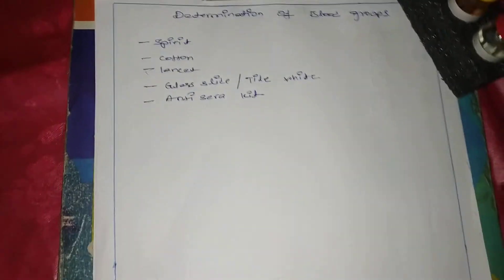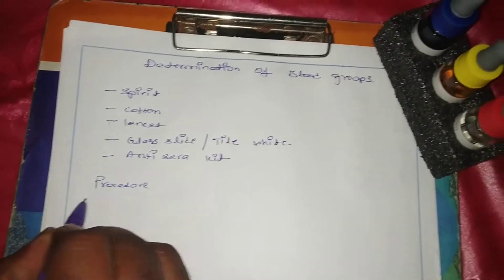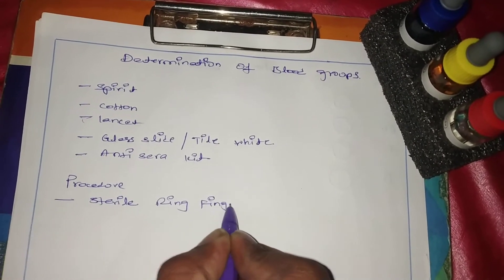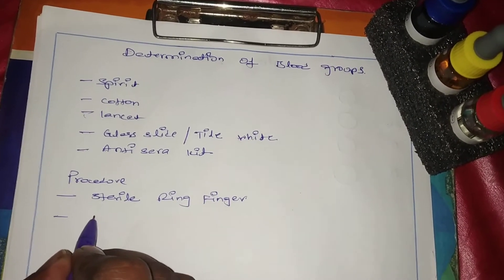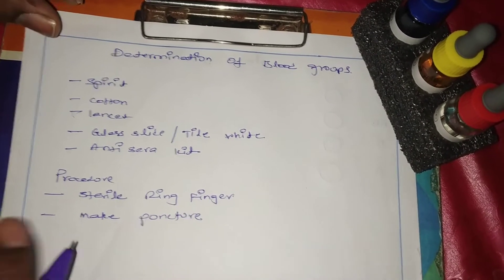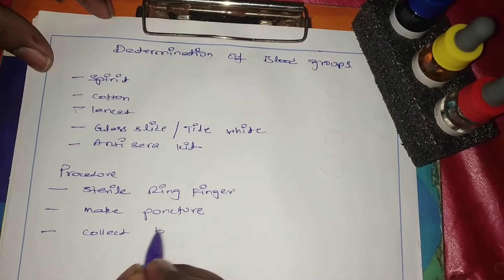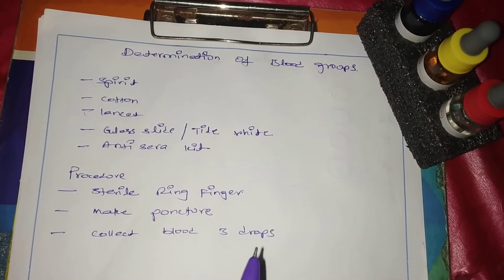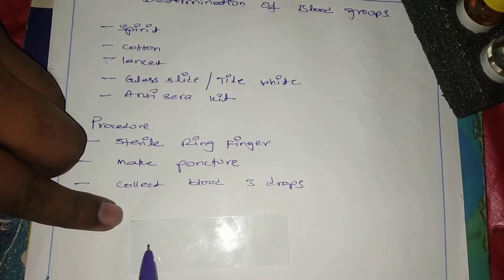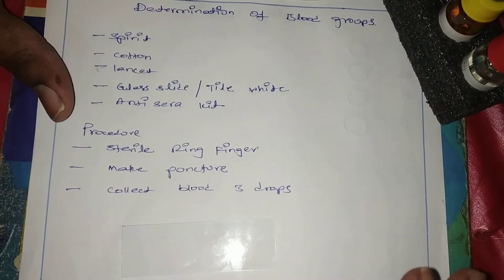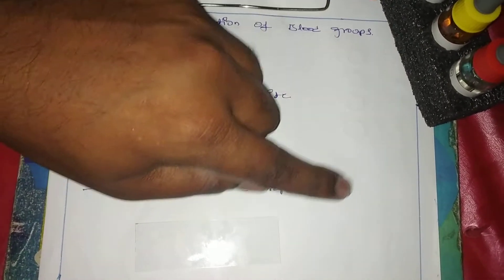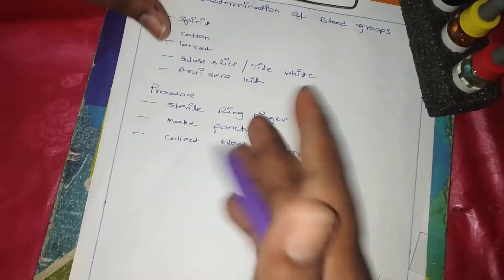When you go for the procedure, first sterilize the ring finger. Make a puncture with the help of the needle. Then collect three drops of blood separately. If you are doing it on a single slide, collect one drop here, one here, and one here. If you want to use separate slides, take three slides and collect the drops separately — one for anti-A, one for anti-B, one for anti-D.